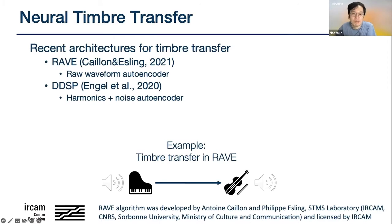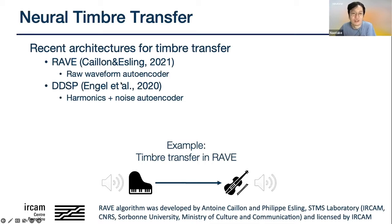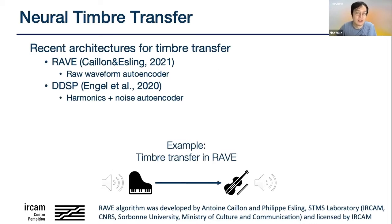Recently there's been some buzz about these sorts of effects. The first is RAVE by Antoine Caillon and Philippe Esling at Ircam. RAVE is a raw waveform variational autoencoder — I'll go into more detail later. And DDSP uses a bit more musical knowledge to do the auto-encoding. Here's an example of a timbre transfer effect, very basic.